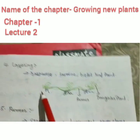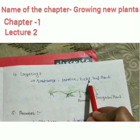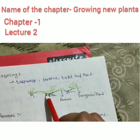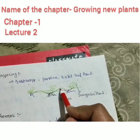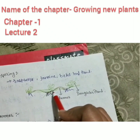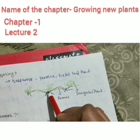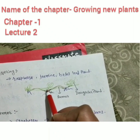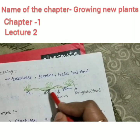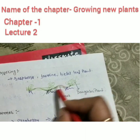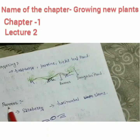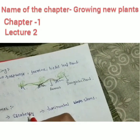Reproduction by layering: plants like raspberries, jasmine, and bottle leaf plant grow new plants by layering. When a plant grows further and its stem comes in contact with soil, it develops new roots at that point and a new plant can grow easily. Runners: some plants, just like creepers, develop horizontal stems.